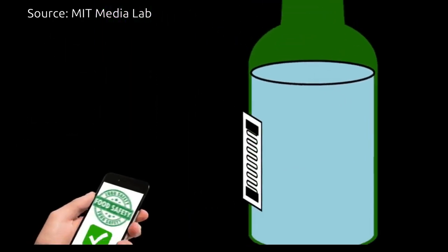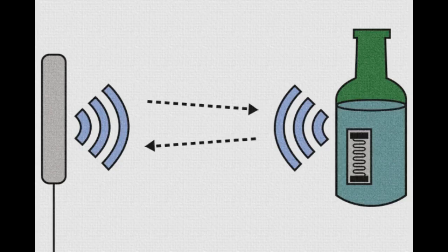But in the future, consumers might have their own reader and software to conduct food safety sensing before buying virtually any product. Systems could also be implemented in supermarkets, backrooms, or in smart fridges to continuously ping an RFID tag to automatically detect food spoilage.